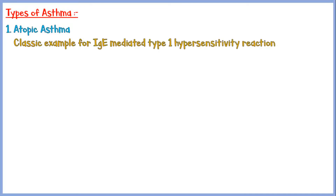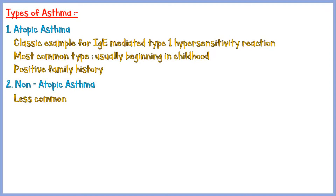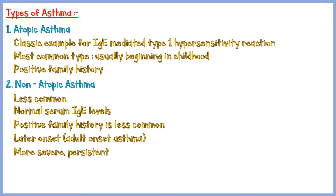Some types of asthma follow the classic description above, and some may not. Atopic asthma is the classic example of IgE-mediated type 1 hypersensitivity reaction discussed earlier. It is the most common type, usually begins in childhood, and patients always have a positive family history of asthma. In non-atopic asthma, which is usually less common, serum IgE levels are quite normal, patients do not have a positive family history of asthma, the disease usually begins in adulthood, and it is more severe and persistent compared to the atopic type. However, the morphology of airways is quite similar to atopic asthma.